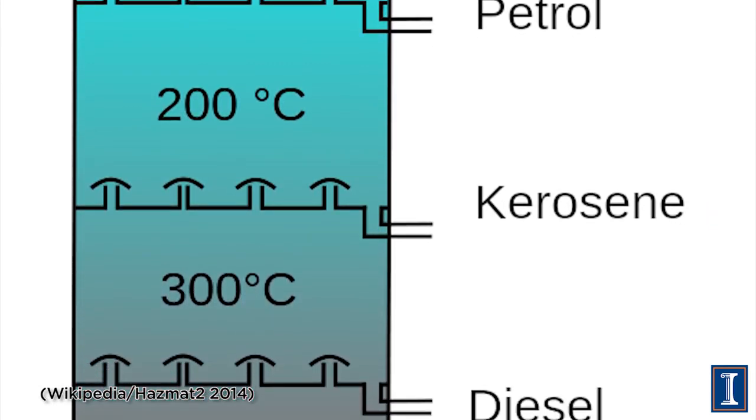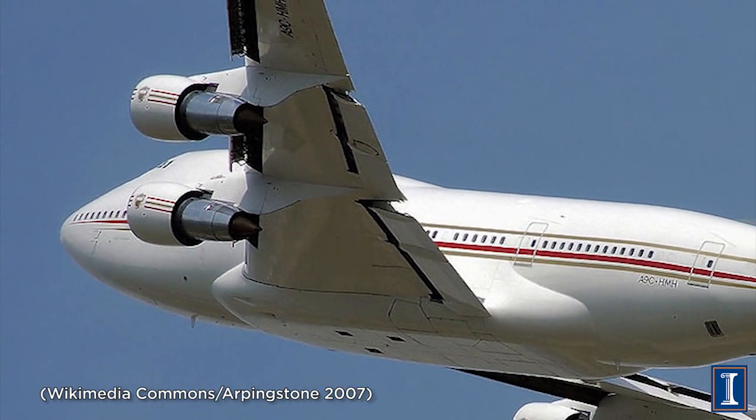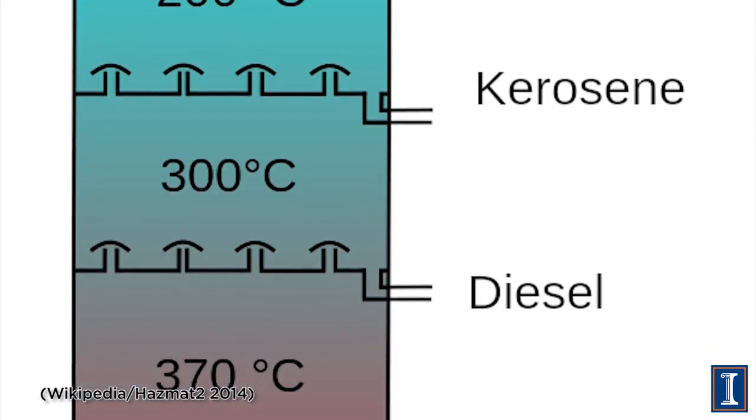Continuing down the fractional distillation column, what comes off next is kerosene. Kerosene consists of roughly C12-length hydrocarbons, and about 12% of all the fuel goes into this category. That's because kerosene is the same thing as jet fuel. Our third largest use of petroleum products is not kerosene heaters or lanterns — it's actually to power airplanes.